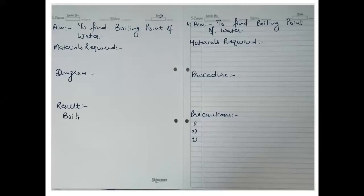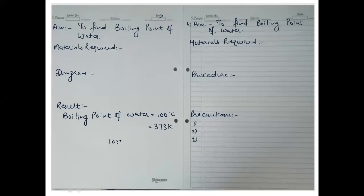What will the result be for this one? The boiling point of water is 100 degrees Celsius, which is 373 K — because 100 plus 273 equals 373. Remember: never write the degree symbol with Kelvin.